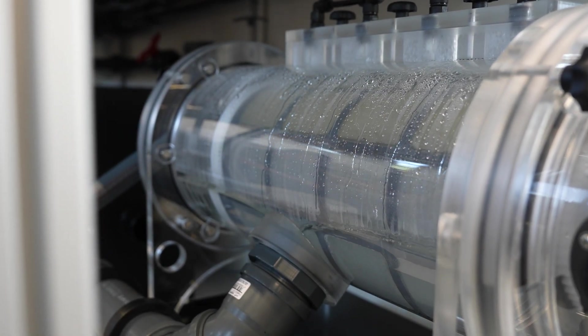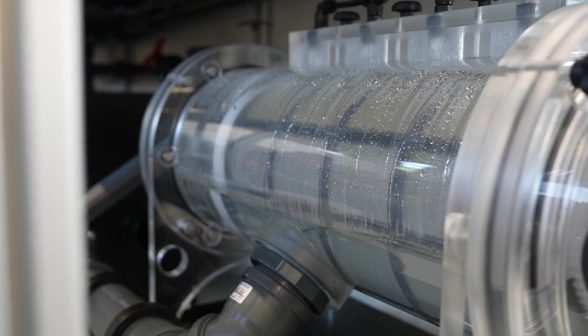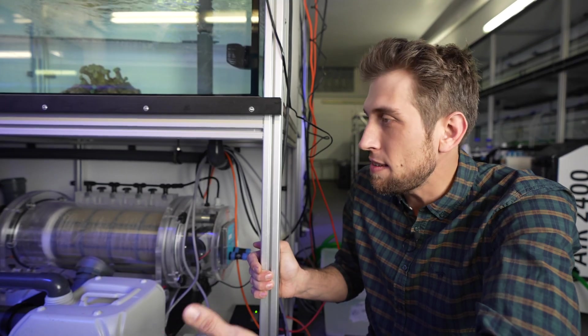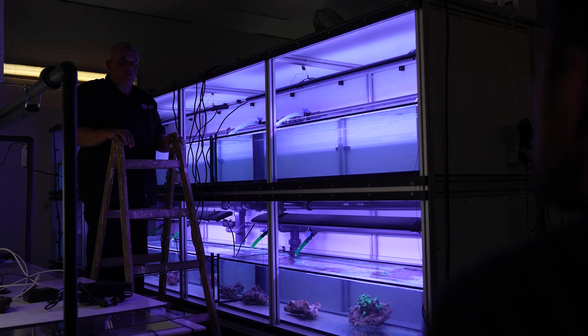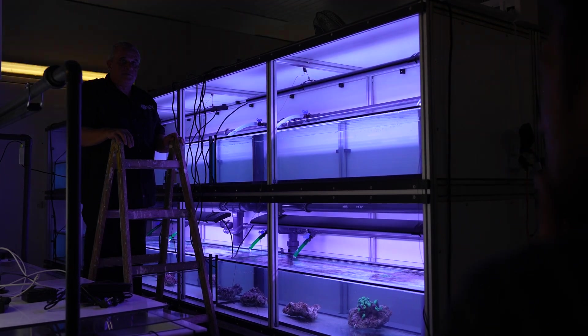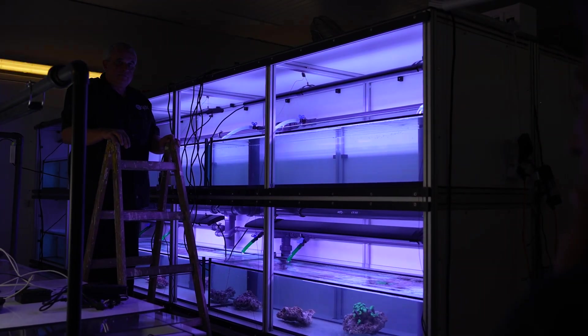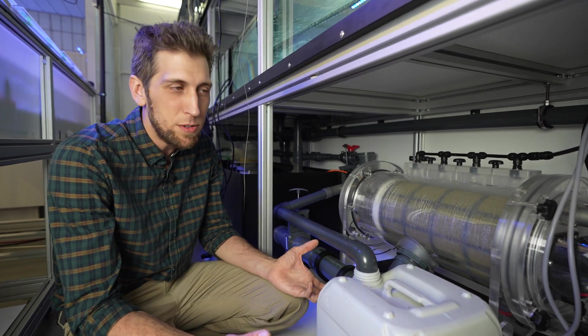So this is a drum filter that takes out particles from the water. And the way it works is basically almost the same as a cloth filter. This one is a rearing system for the baby corals. It's important that we reduce sedimentation as much as possible, because sedimentation is a problem for the tiny corals.